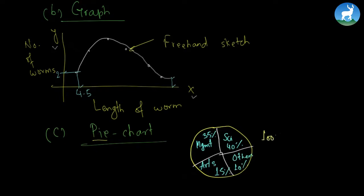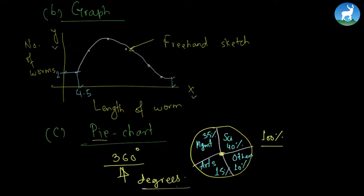Likewise for arts we have 15% and for others we have 10%. In this way we have divided 100% into several components and shown it in a pie chart. Always remember, a pie chart is calculated in 360 degrees, which means all the information has to be converted into degrees.